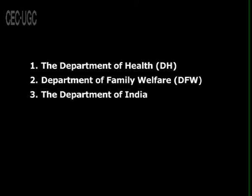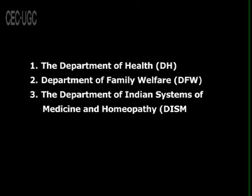The three departments are: number one, the Department of Health; number two, the Department of Family Welfare; and number three, the Department of Indian System of Medicine and Homeopathy. In addition, the Ministry of Health and Family Welfare has two additional secretaries, eight joint secretaries, and 30 offices of the rank of directors, excluding technical advisors.